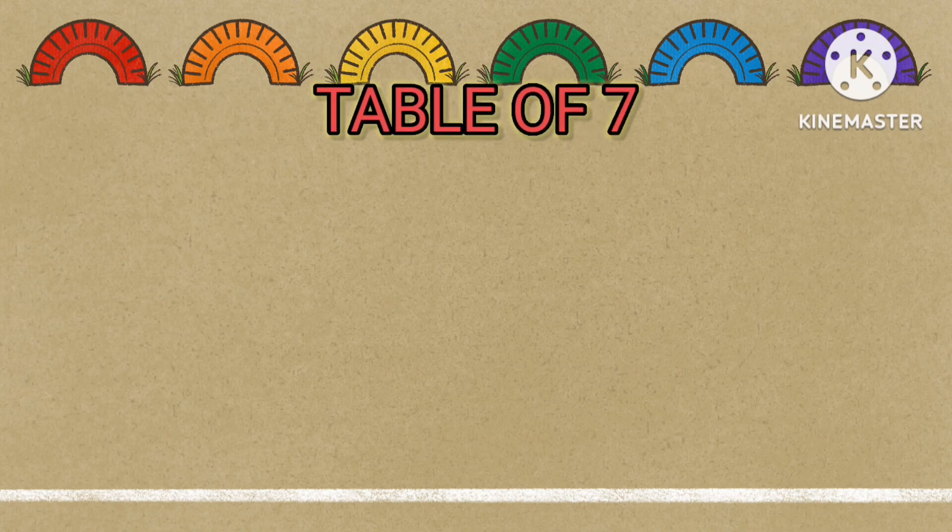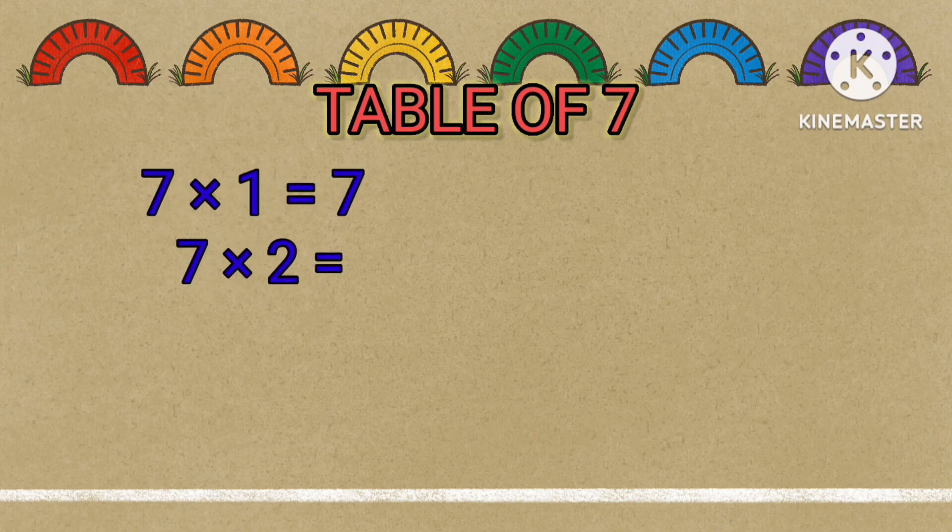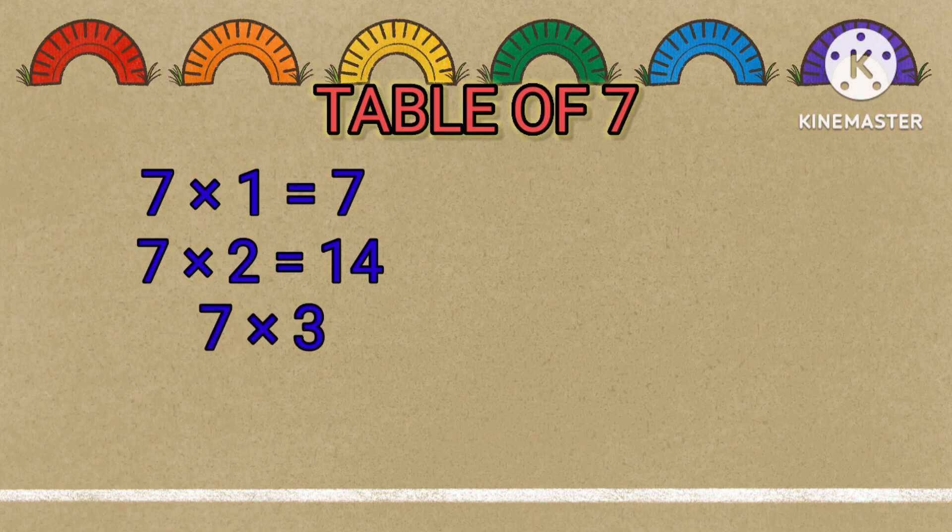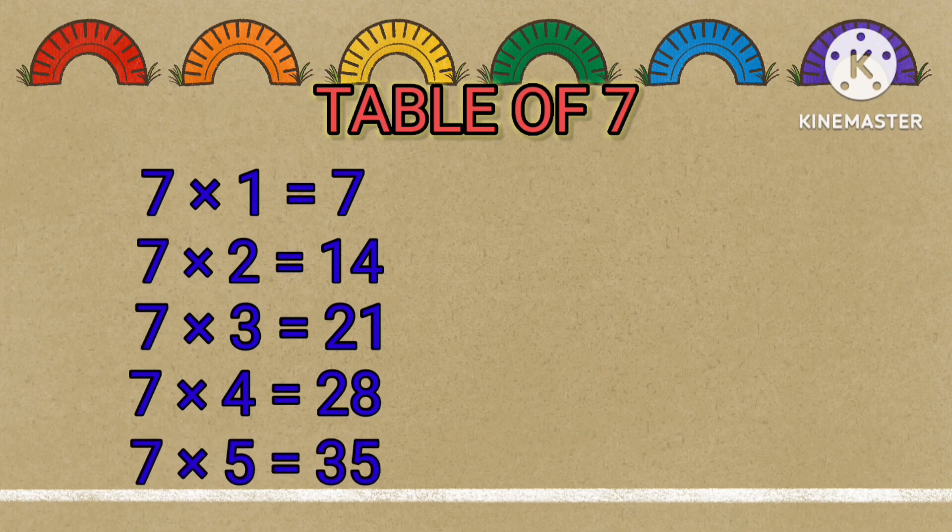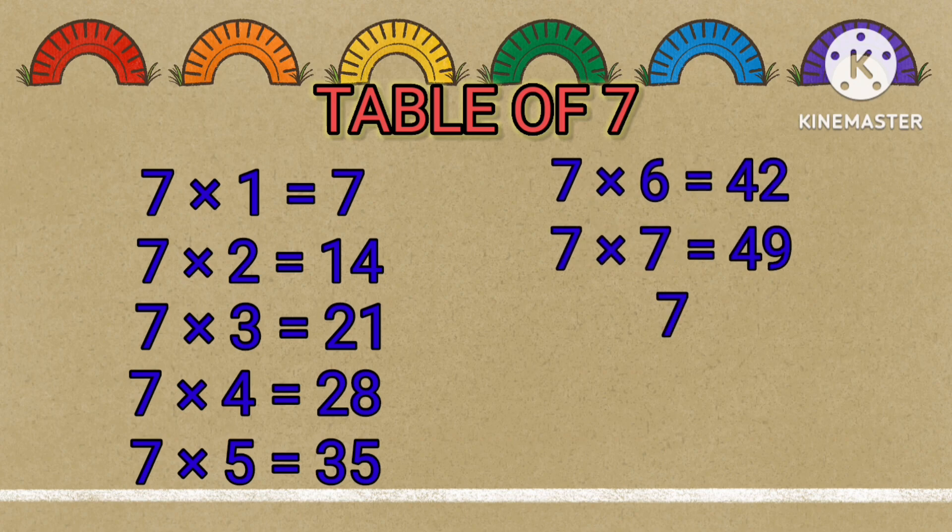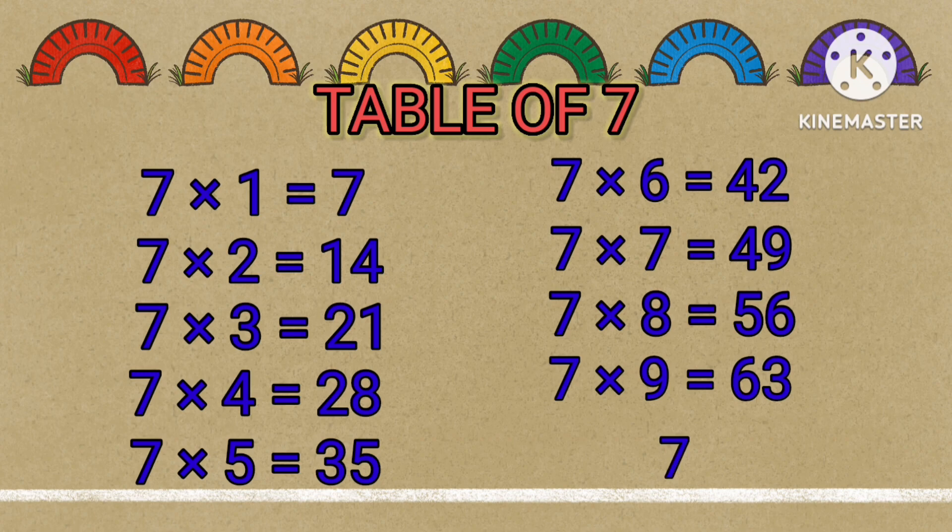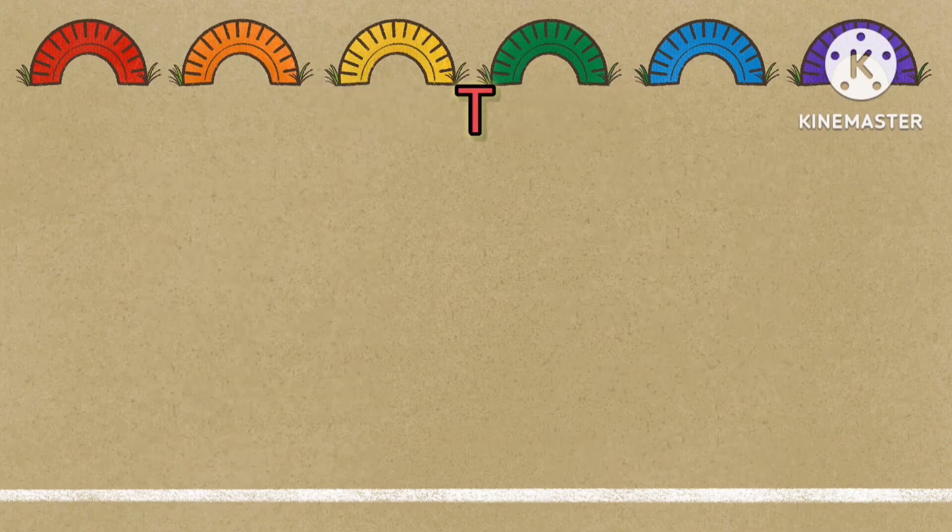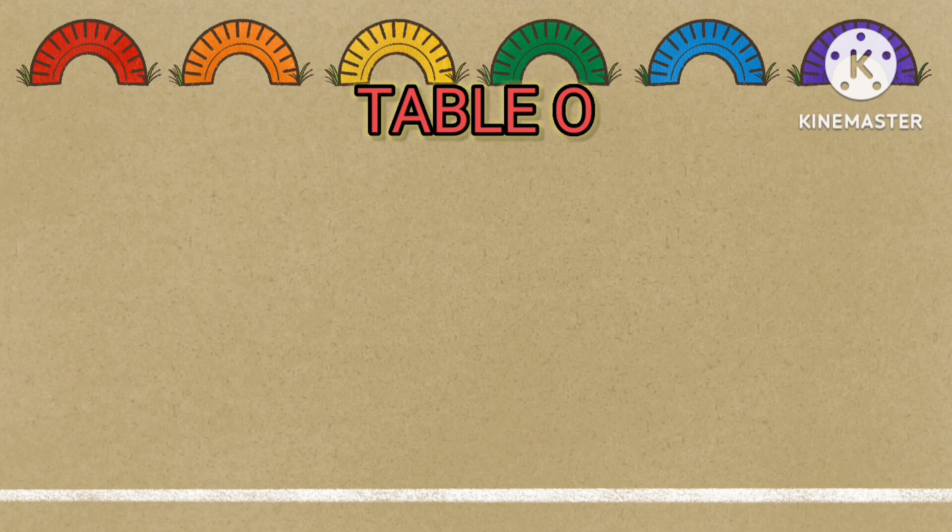Table of 7: 7 times 1 equals 7, 7 times 2 equals 14, 7 times 3 equals 21, 7 times 4 equals 28, 7 times 5 equals 35, 7 times 6 equals 42, 7 times 7 equals 49, 7 times 8 equals 56, 7 times 9 equals 63, 7 times 10 equals 70.